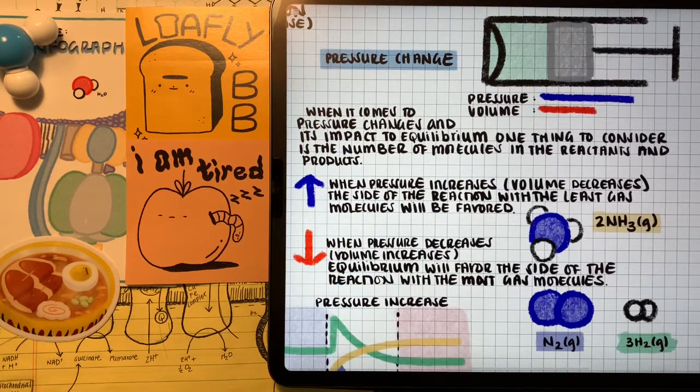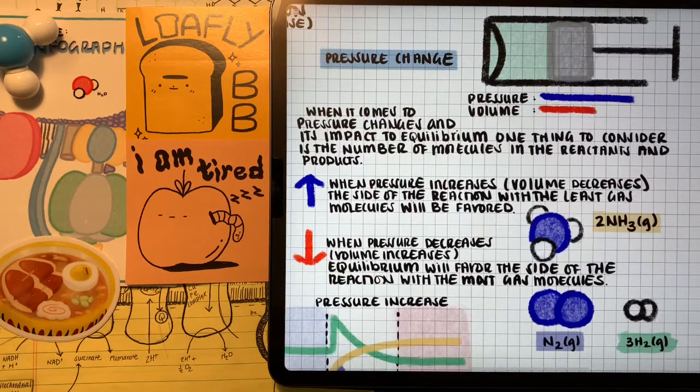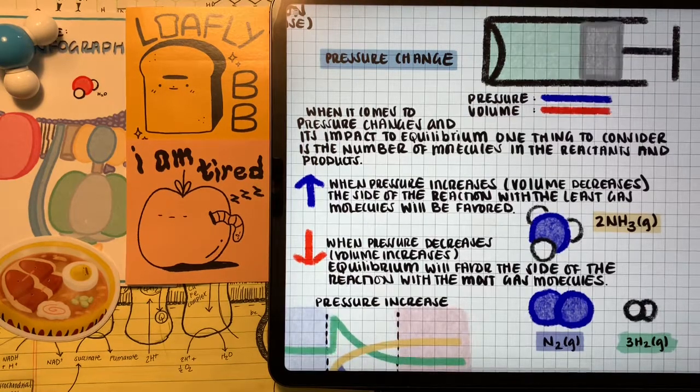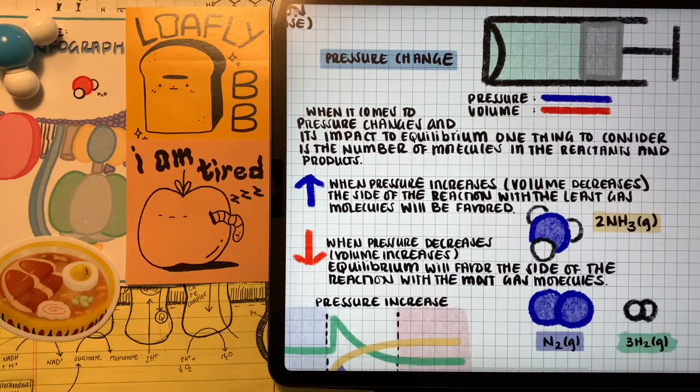But if we decrease pressure and increase volume, it's going to be the reverse. The side of the reaction with the most gas molecules is going to be favored. And this is how a system at equilibrium behaves for pressure and volume changes.